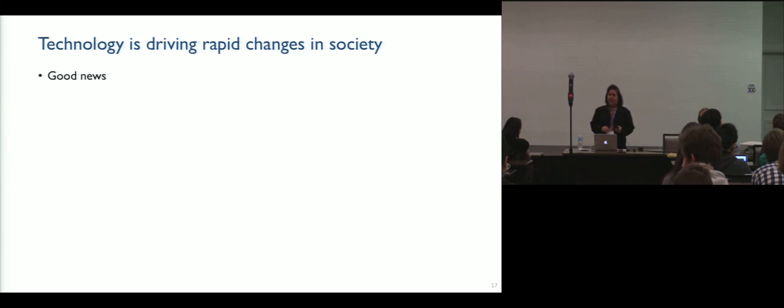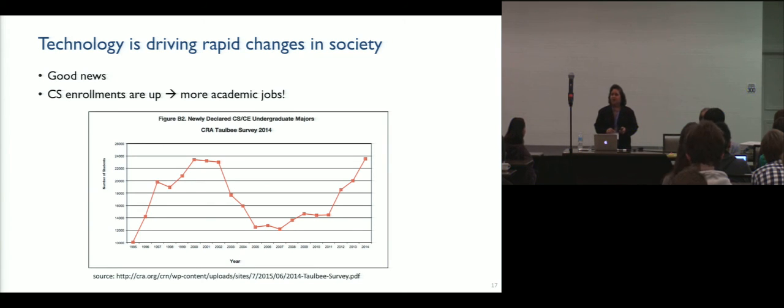And let me shift gears a little and talk about technology. We all know the technology is driving rapid changes in society. The good news for you all is that CS enrollments are up, way up. So there's a lot more academic jobs for you. Here's some data from the CRA Talby survey. And as you can see, from 2014, even, we are higher than the highest we were in past, in terms of enrollment in CS. At Princeton, I can tell you, it's an Ivy League liberal arts, proud to be a liberal arts school. The enrollment in CS courses is the highest of any discipline on campus. And for the first time last year, the number of declared majors of computer science was higher than econ by one. But we are proud of it. And we hope to grow that. So the good news, like I said, for all of you interested in academia, at least these days, the CS enrollments are up. So there are more academic jobs.